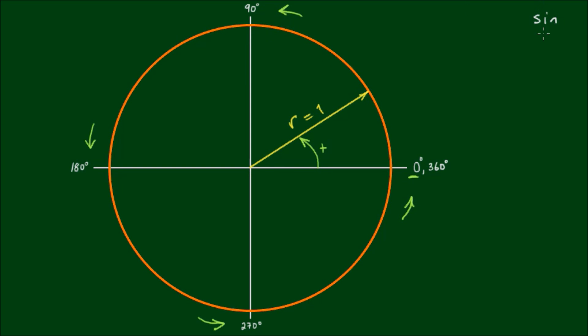Sine, cosine and tangent, as well as being trigonometric functions, are also known as circular functions. Because every single point on this unit circle can be described in terms of these functions of an angle.